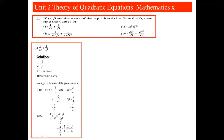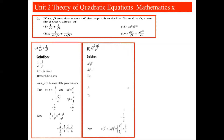To evaluate 1/α + 1/β, we take LCM which is αβ, giving (α + β)/(αβ). The sum of roots is 5/4 and product is 3/2, so we have (5/4) ÷ (3/2) = (5/4) × (2/3) = 10/12 = 5/6. Therefore, 1/α + 1/β = 5/6.